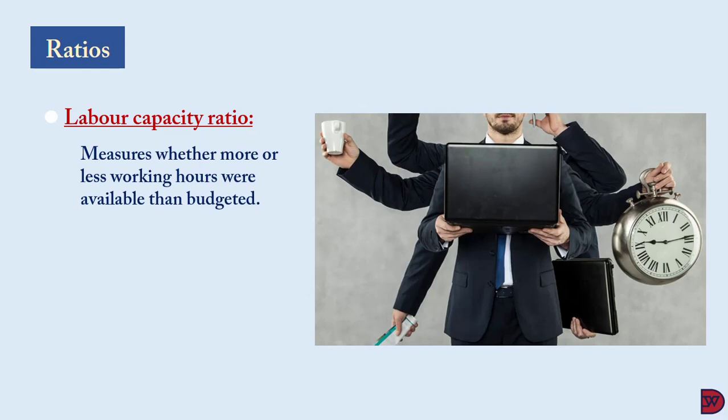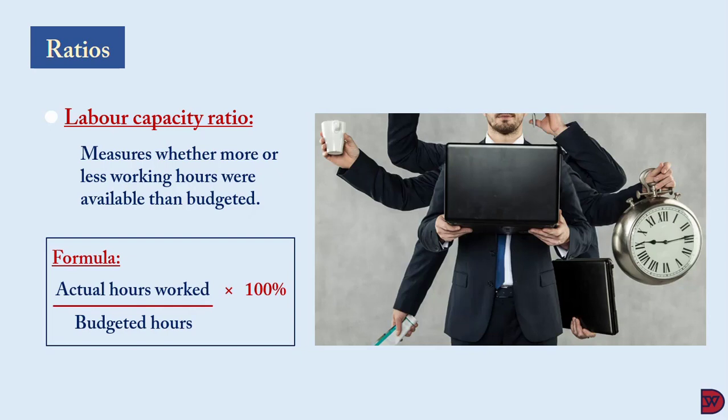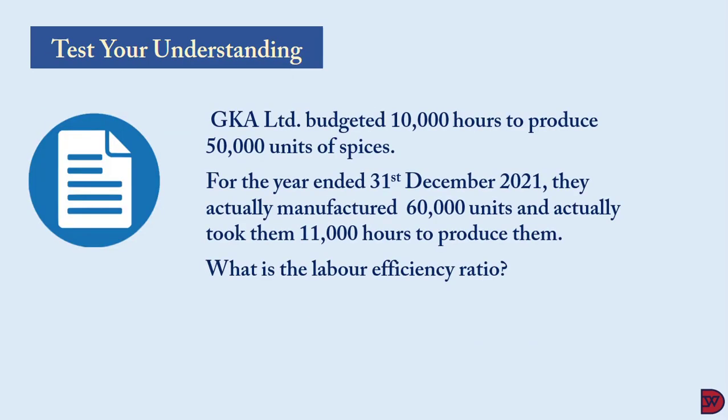We move on to the labor capacity ratio, which measures whether employees were able to work all through the budgeted hours — in other words, whether the business obtained more or fewer working hours from labor than budgeted. The more hours available, the better positioned the business is to manufacture more units, and vice versa. The capacity ratio formula is: actual hours worked divided by budgeted hours, multiplied by 100.